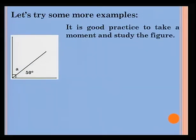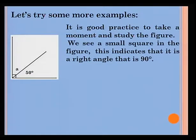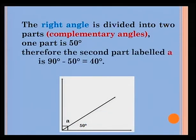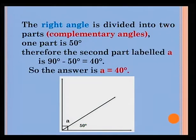Let's try some more examples. It is good practice to take a moment and study the figure. We have a small square in the figure, which indicates that it is a right angle — that is, 90 degrees. The right angle is divided into two parts, the complementary angles. One part is 50 degrees. Therefore, the second part, labelled A, is 90 degrees minus 50 degrees, which is equal to 40 degrees. So the answer is A equals 40 degrees.